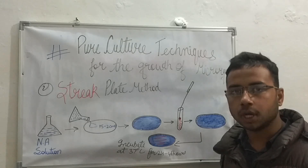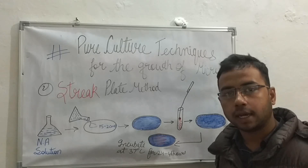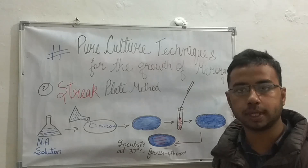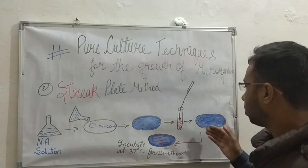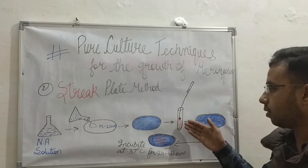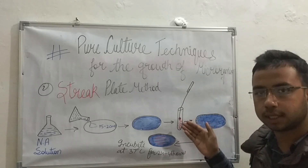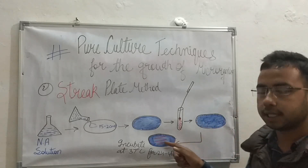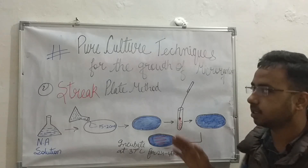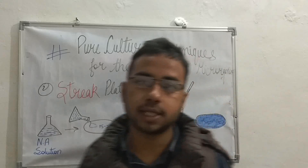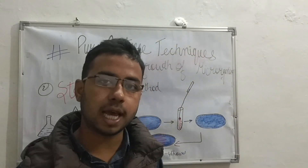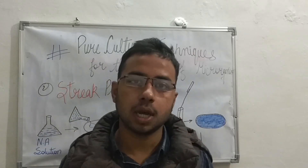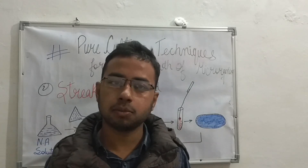Before using the inoculating loop, we heat it until red hot to sterilize it. After sterilization, we dip the inoculating loop into the culture sample which is 10-times diluted, then streak on the plate in a zigzag manner. Streaking means spreading the culture in a zigzag manner with the inoculating loop. This is the best method currently used for pure culture techniques.